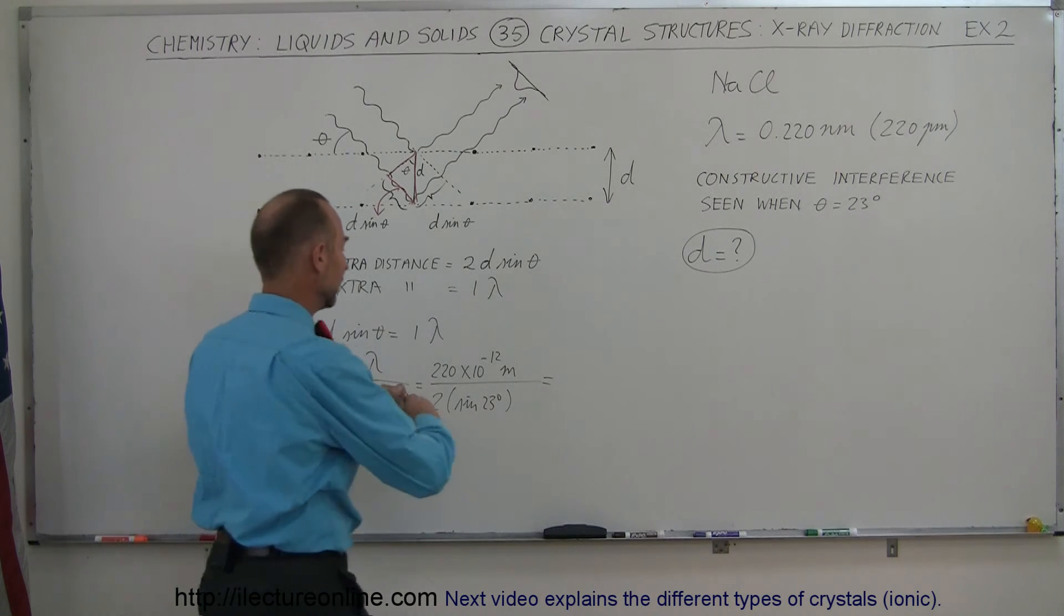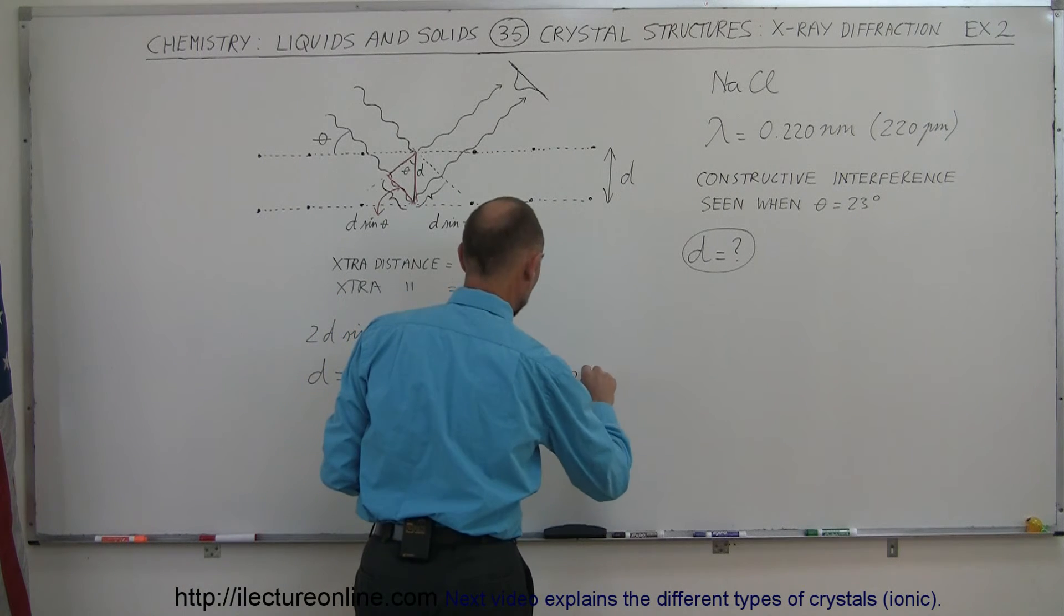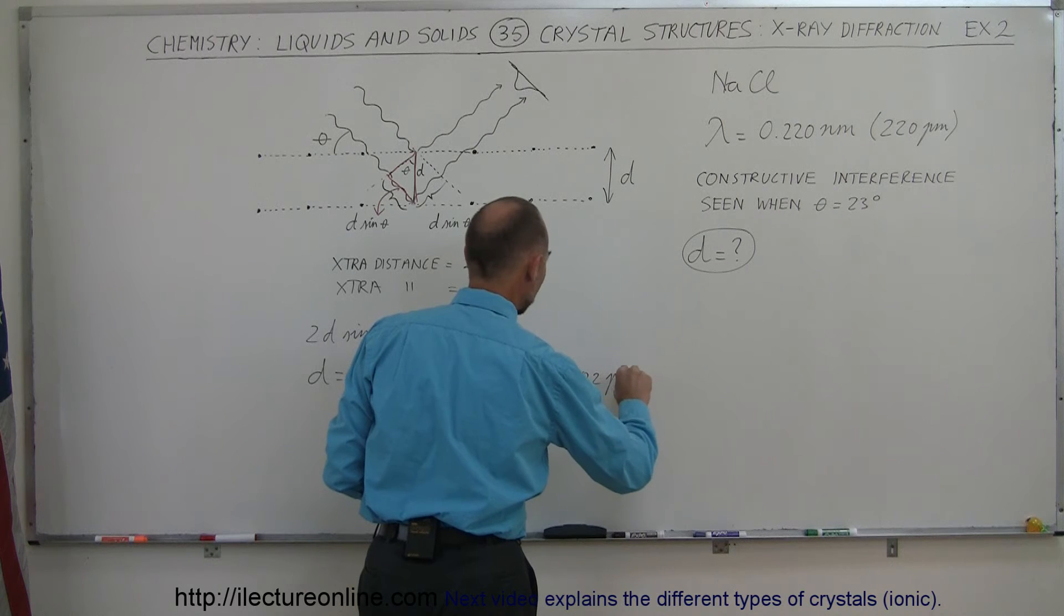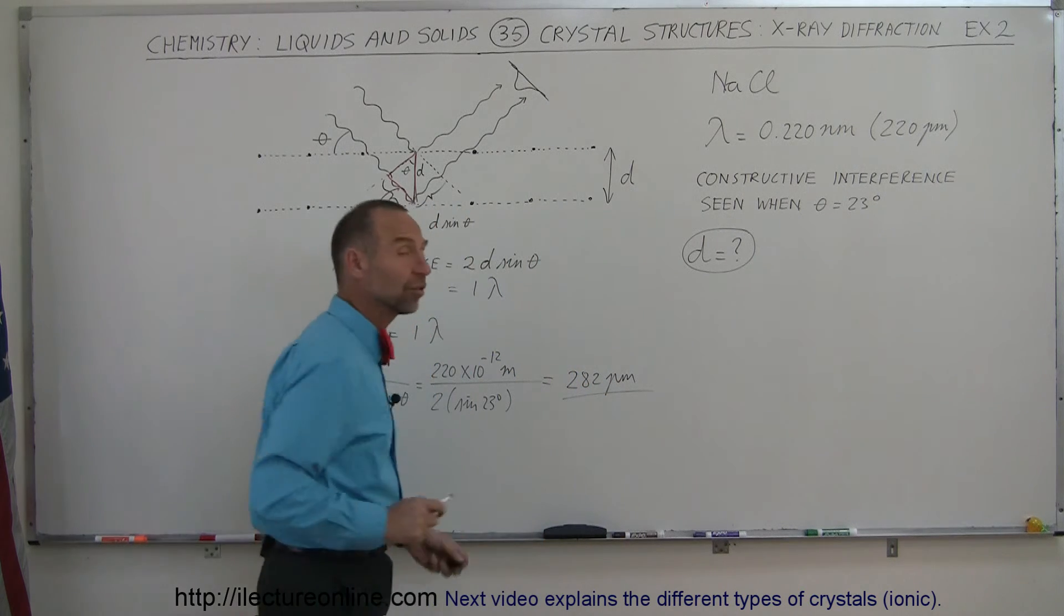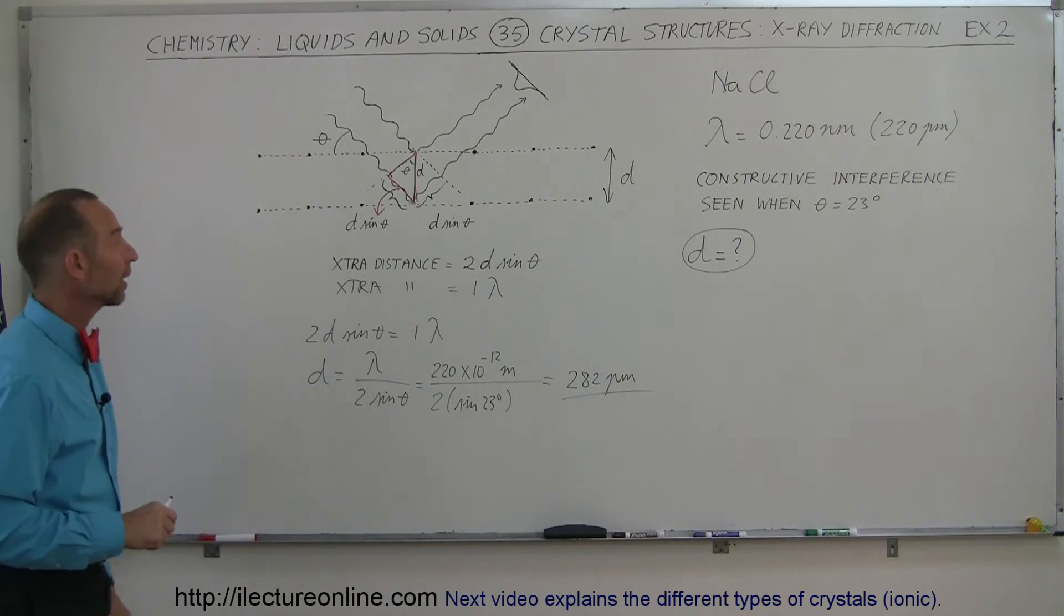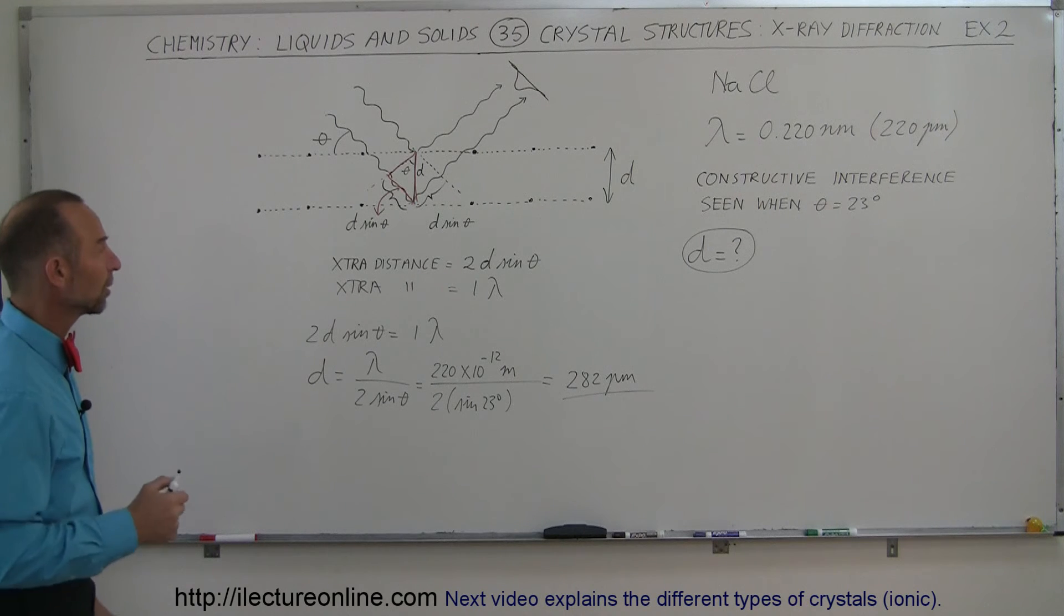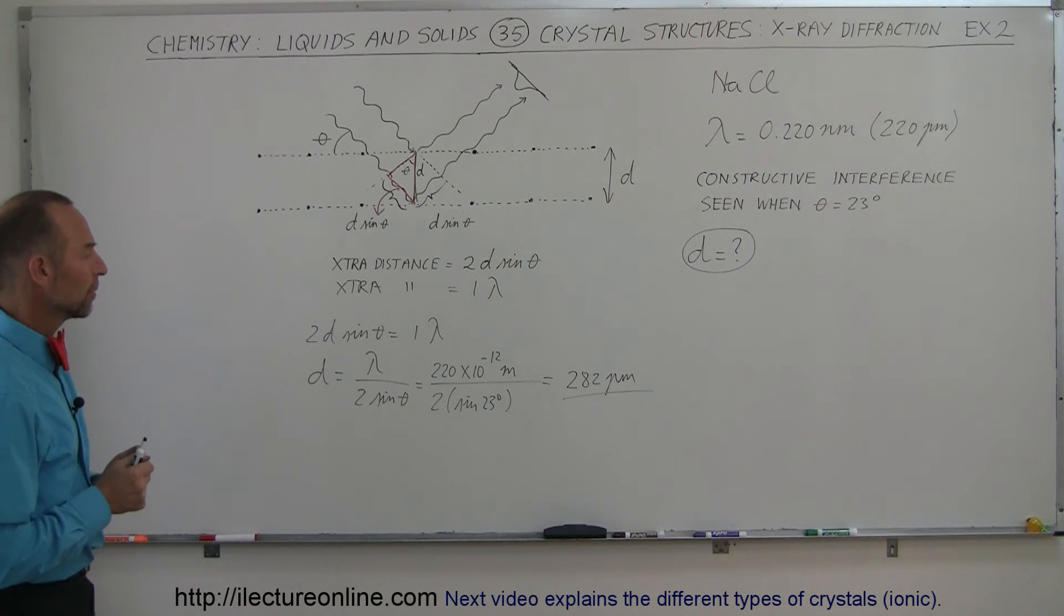And we get 281.5. Let's round it off to 281 or 282. 282 picometers would be the separation distance between the sodium and the chlorine ions.